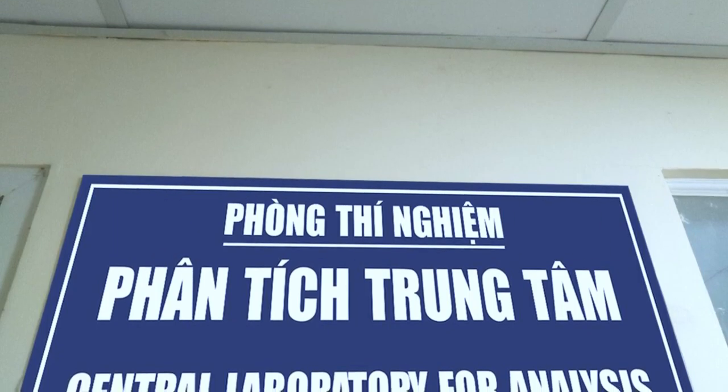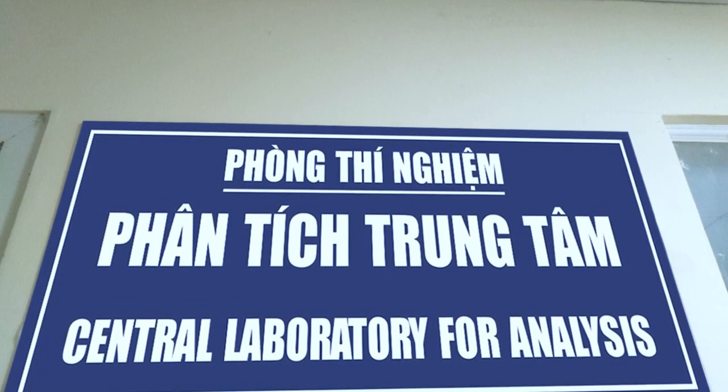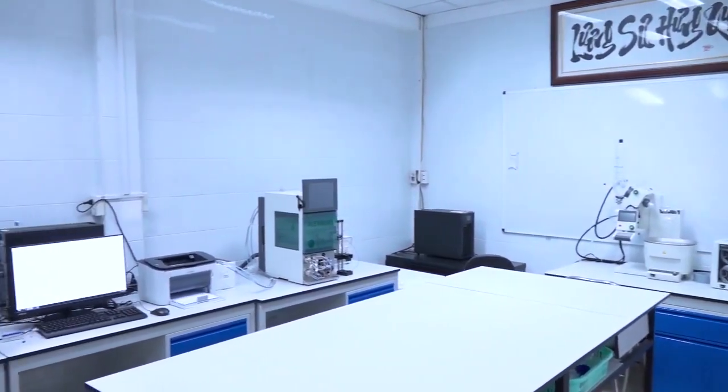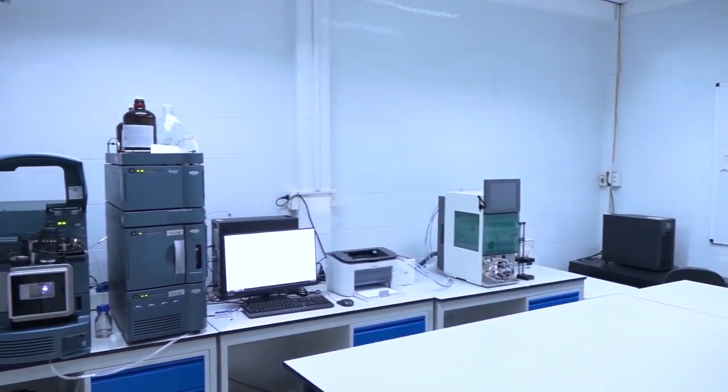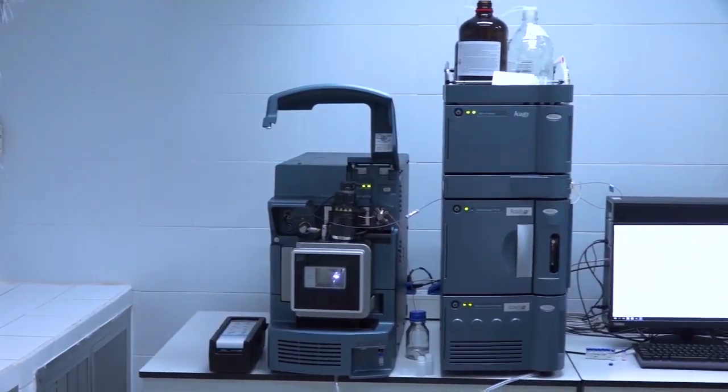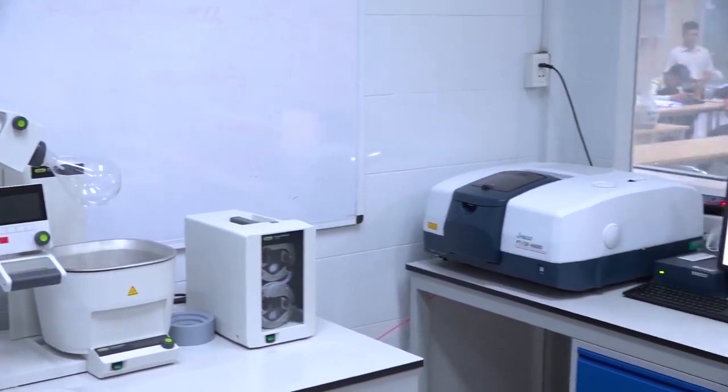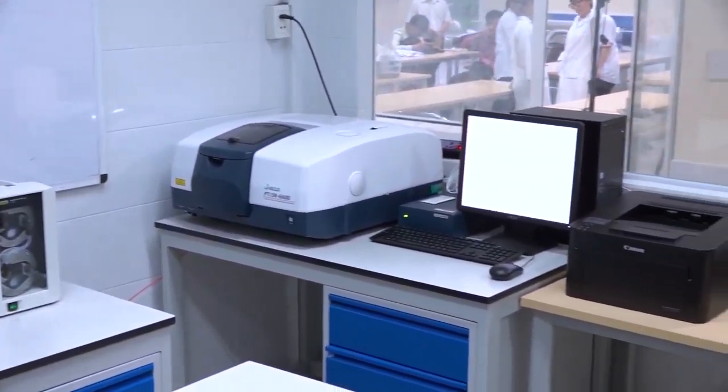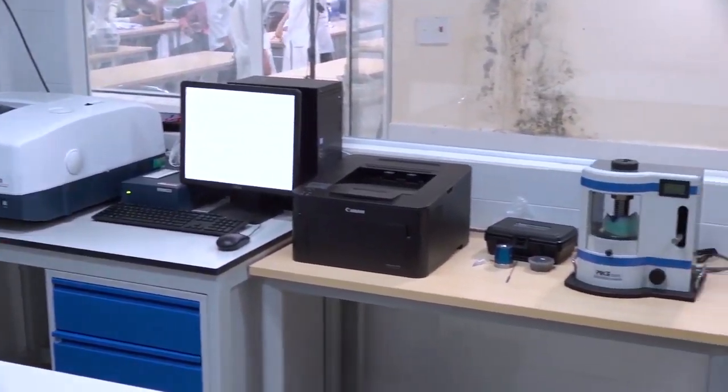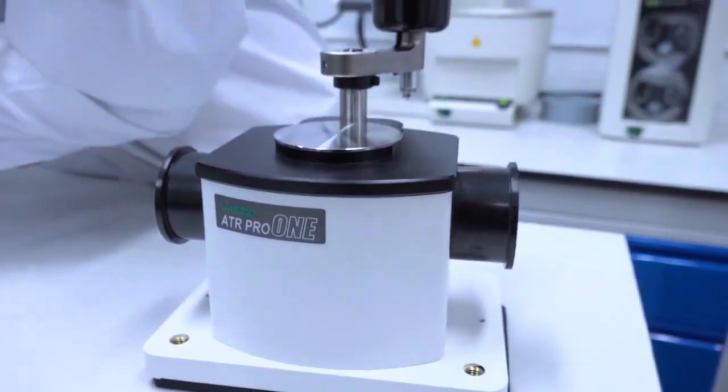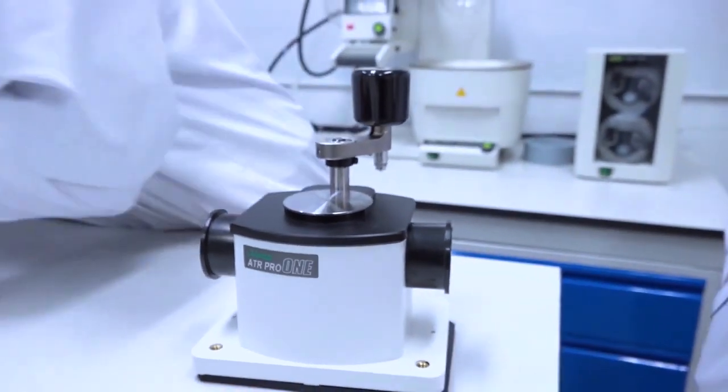The Central Laboratory for Analysis is a typical laboratory of the Chemistry Department for conducting complicated scientific research of undergraduate students, graduate students, and researchers. All machinery systems of the lab are modern instruments supplied by reputable vendors, ensuring that analytical data meet national and international publication standards.